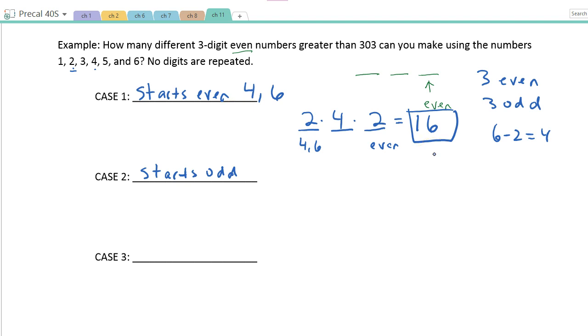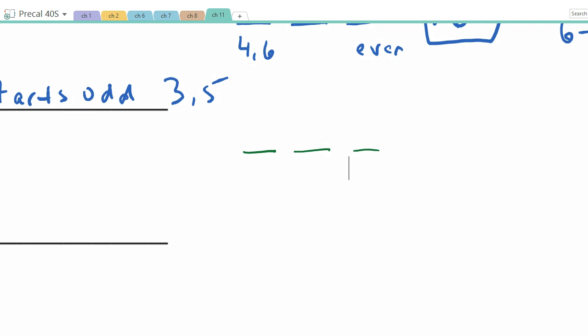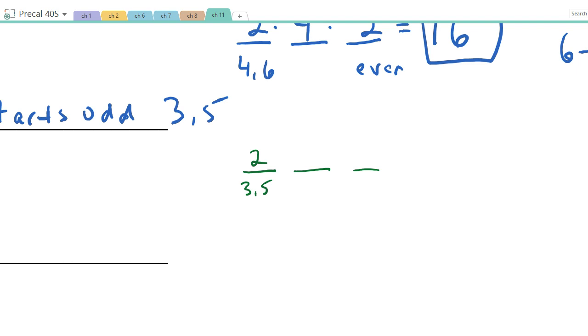How about if it starts with an odd? Now if it starts with an odd, it can't start with a 1. It has to start with either a 3 or a 5. Here, I'll switch to green so we keep track of things a bit better, so we have these three digits here. So the first digit, like I said, has to be either the 3 or a 5, so there's two different ways to do that.